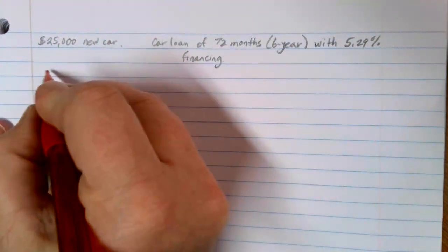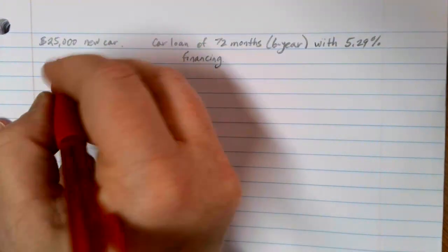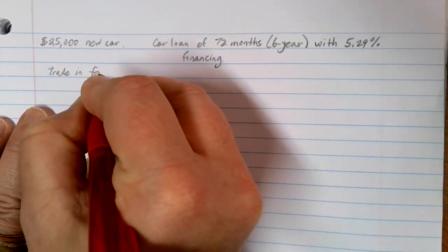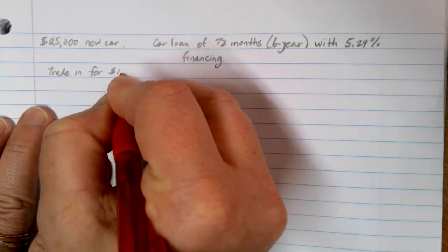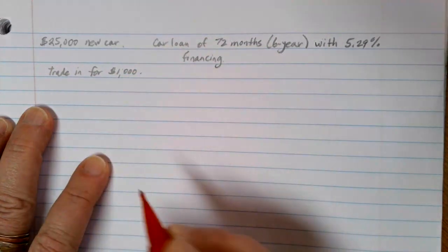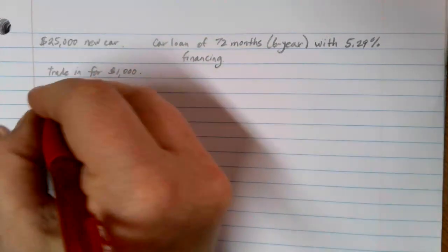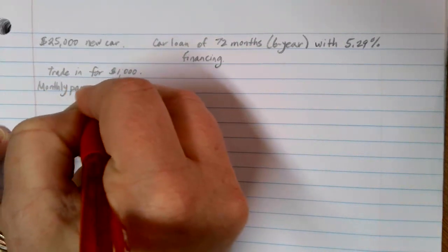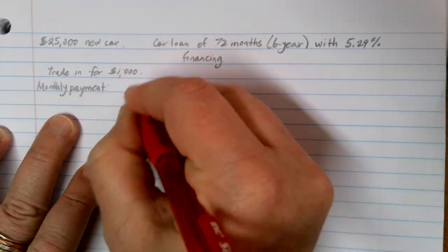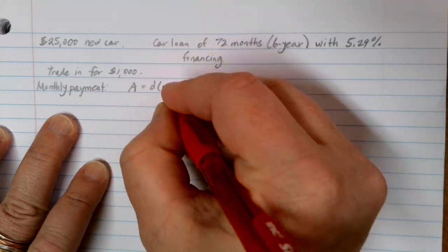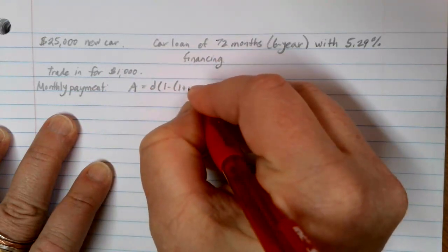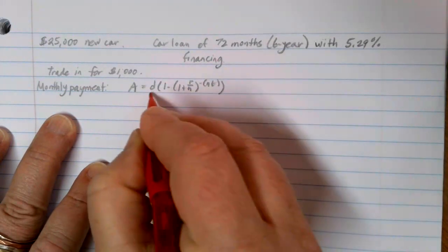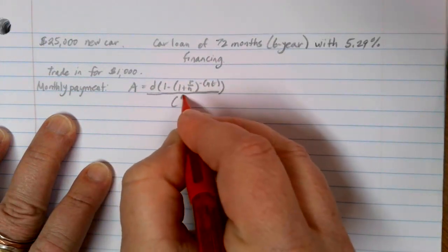We have an old broken-down car that we're going to trade in for $1,000. If we want to figure out what our monthly payment is going to be, we're going to be using the loan formula: A is equal to D times 1 minus 1 plus R over N to the negative NT all over R over N.